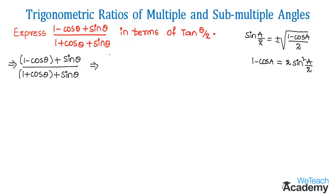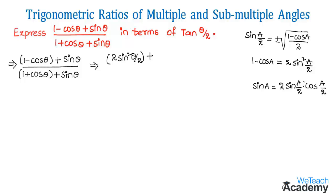Using this formula, we replace 1 minus cos theta with 2 sin²(theta/2). Then sin theta can be written in the form of theta/2 using the sub-multiple angle formula: sin a = 2 sin(a/2) cos(a/2). So we write sin theta as 2 sin(theta/2) cos(theta/2).